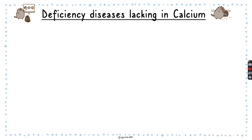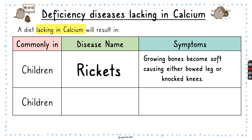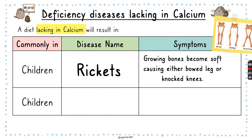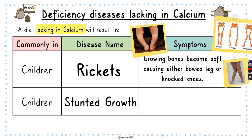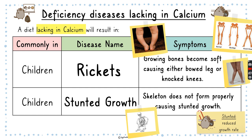Deficiency diseases lacking in calcium are quite similar to vitamin D since both are needed for strong bones and teeth. For children, there is rickets — growing bones become soft, causing either bowed leg or knocked knees, same as before. But another one for children is stunted growth, meaning the skeleton doesn't form properly and they won't grow bigger — stunted growth means a reduced growth rate.